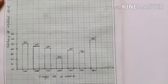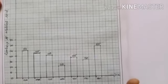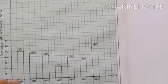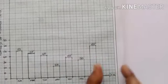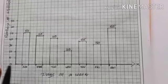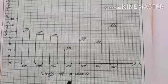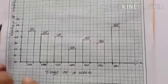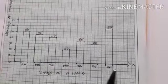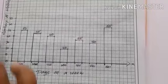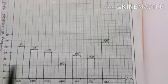This is a vertical bar graph. If you want to draw a horizontal bar graph, it is very simple — just interchange the two axes. Write the numbers on the x-axis and mark the categories on the y-axis, and you will get a horizontal bar graph.